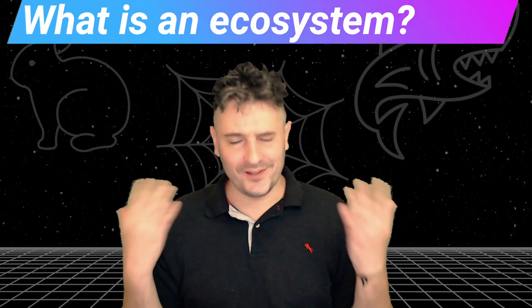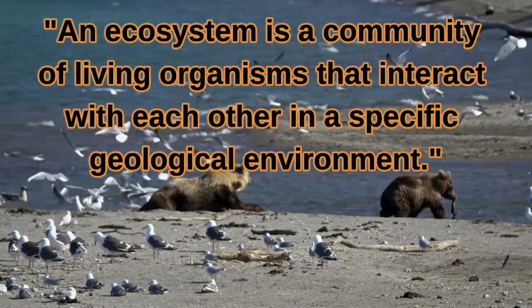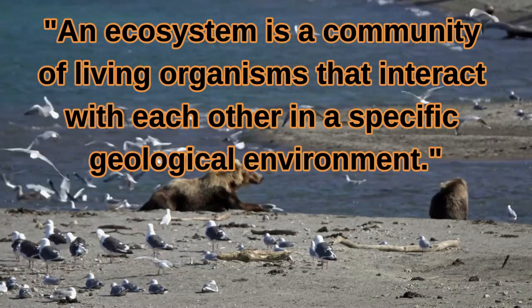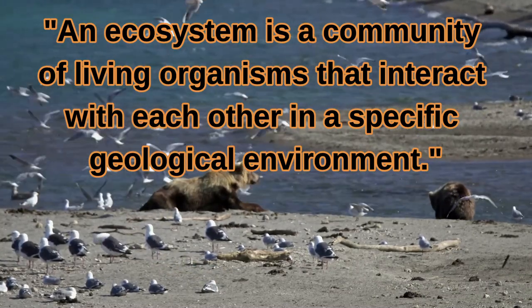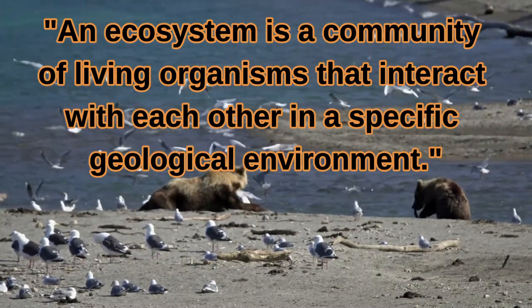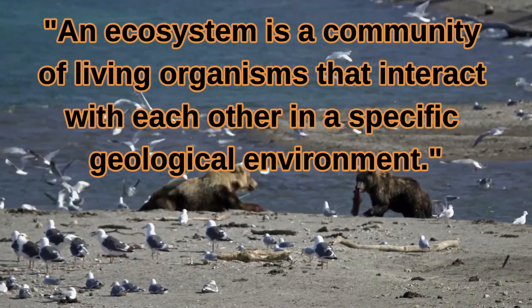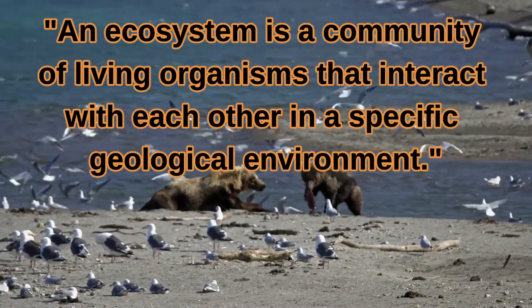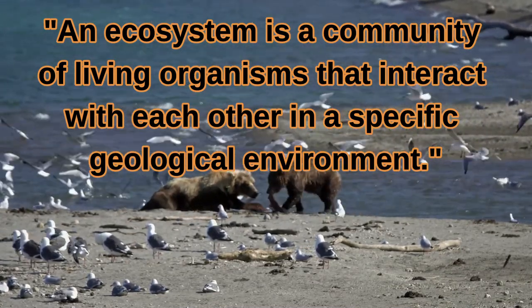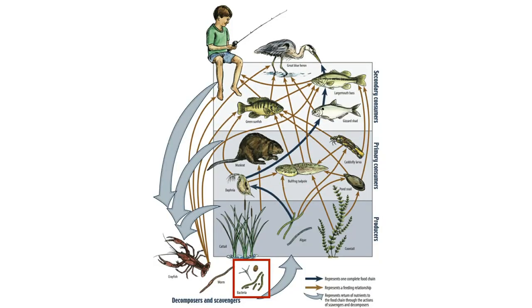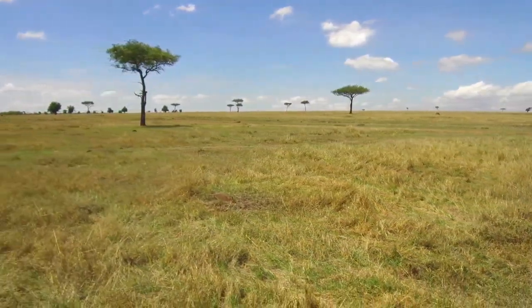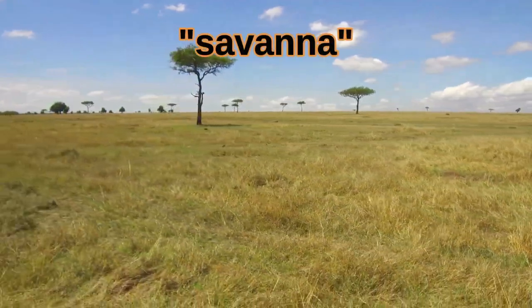First, what is an ecosystem? An ecosystem is a community of living organisms that interact with each other in a specific geological environment. A fundamental idea in ecology is that all life in an ecosystem somehow interacts with or depends on each other. Let's take a look at the dry savannah grassland biome.